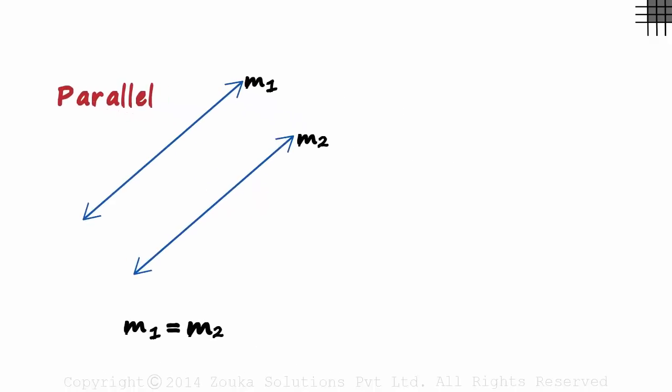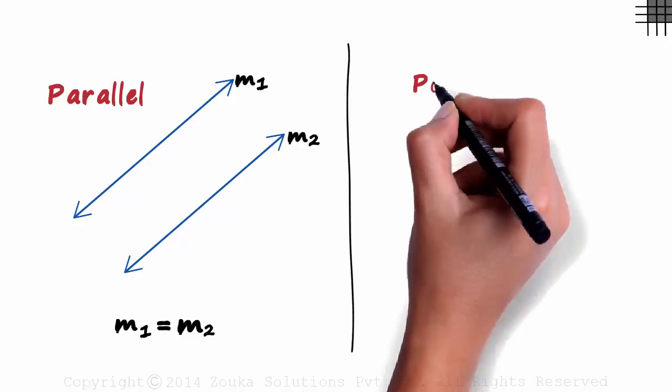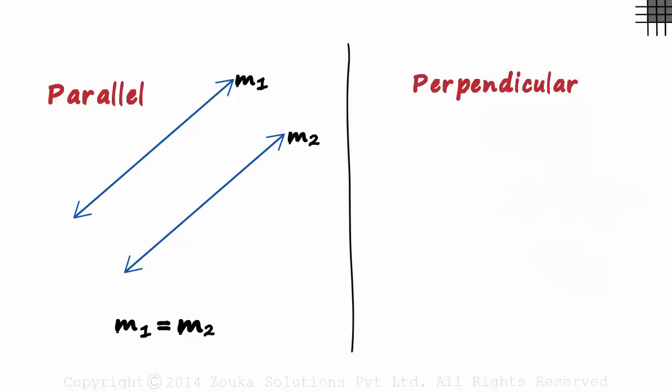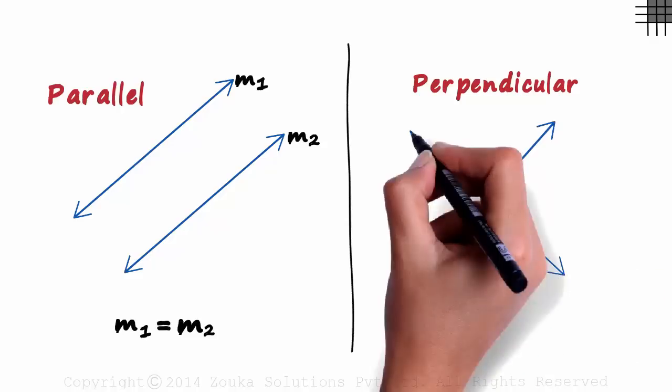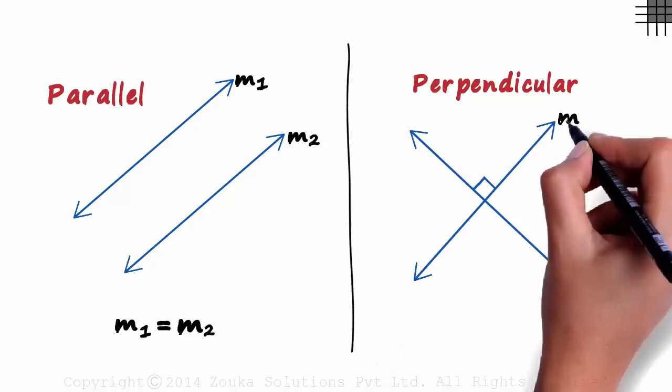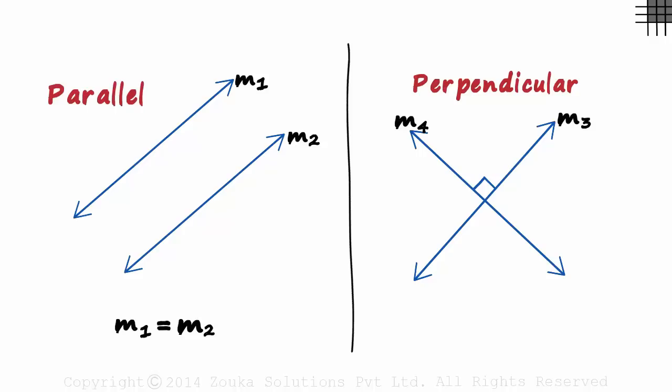Okay great! So how are the slopes of two lines that are perpendicular to each other related? Take these two lines for instance. Assume their slopes are M3 and M4. This may not be obvious but the product of their slopes is minus 1. M3 times M4 is equal to minus 1. Another fancy way to say it would be that they are negative reciprocals of each other. M3 will equal minus 1 over M4 and M4 will equal minus 1 over M3.